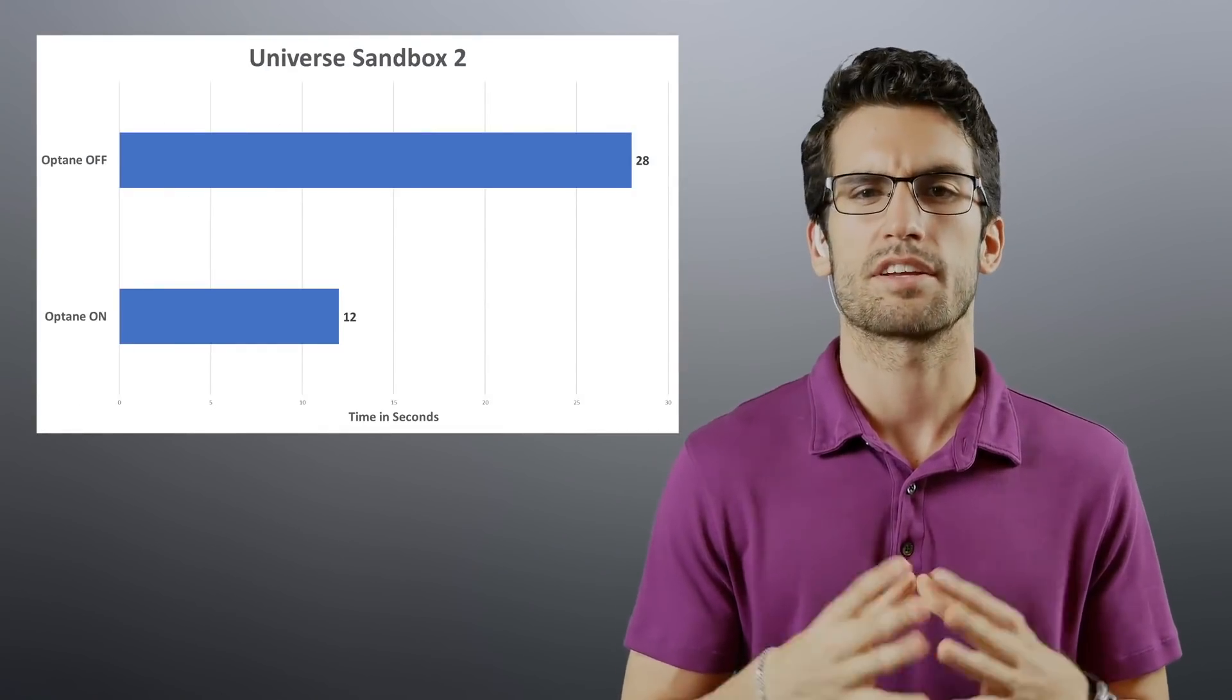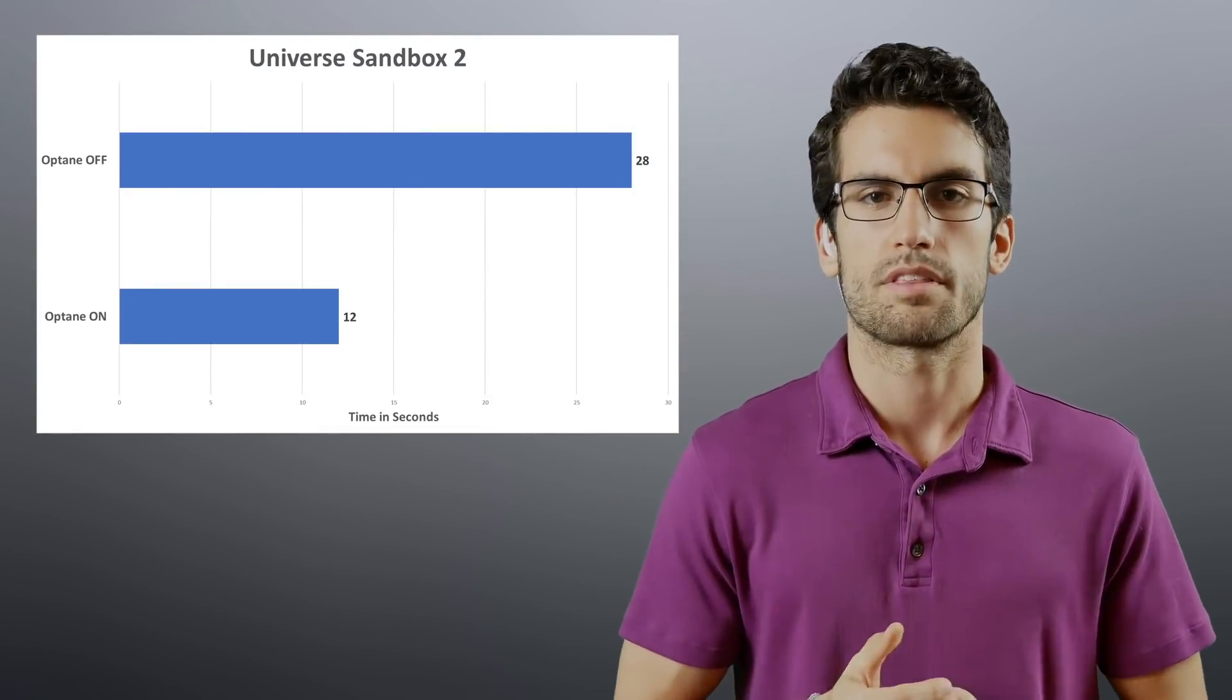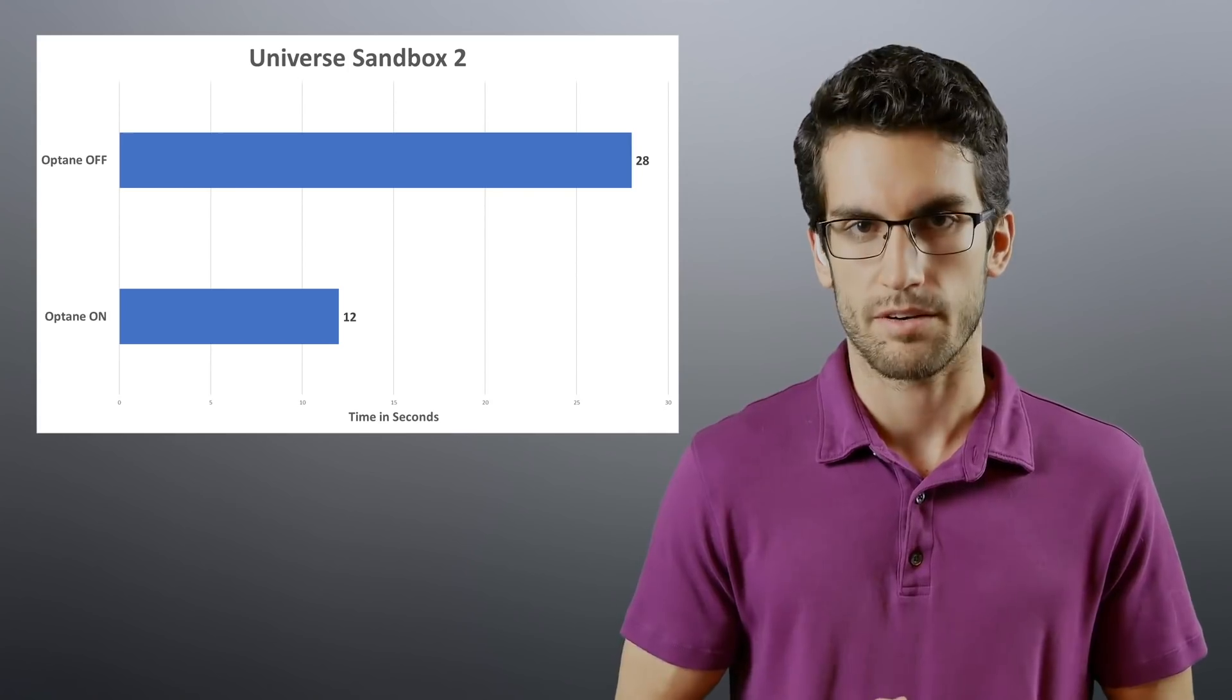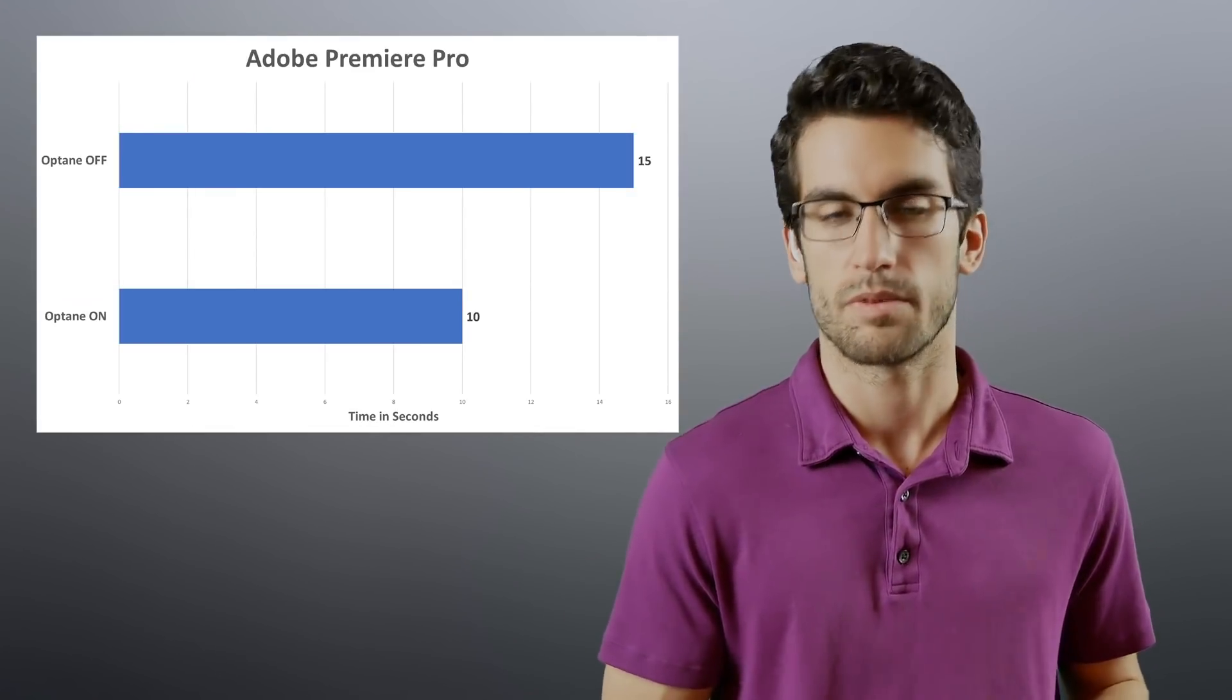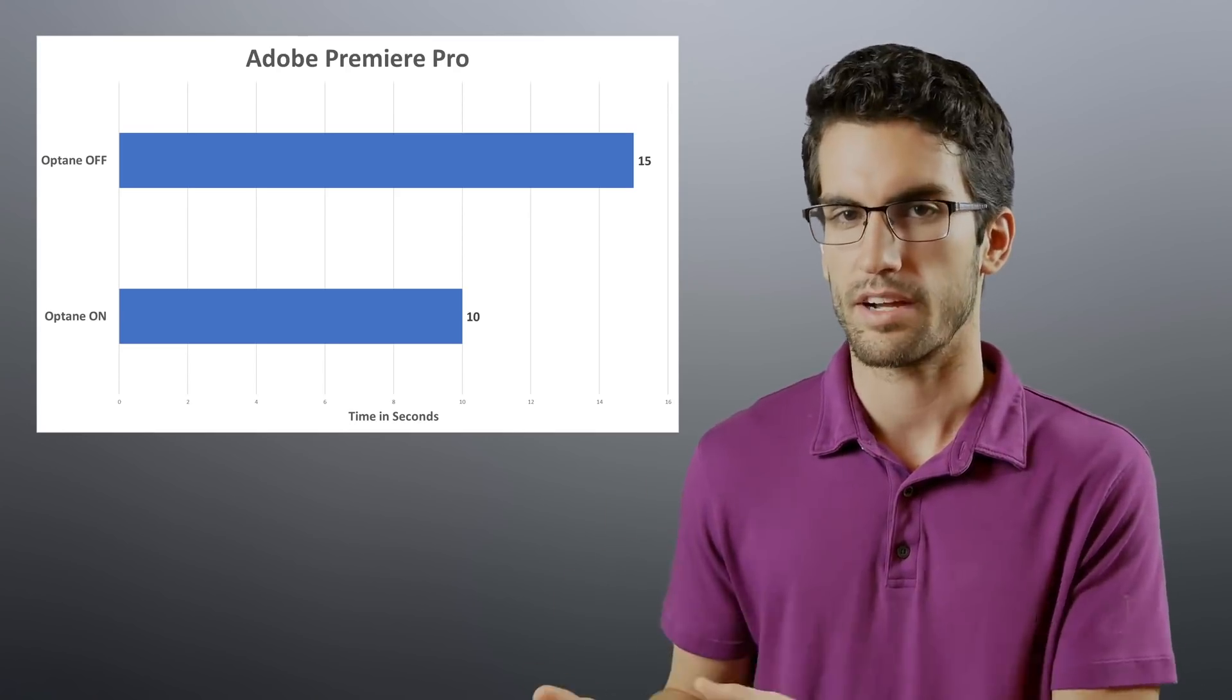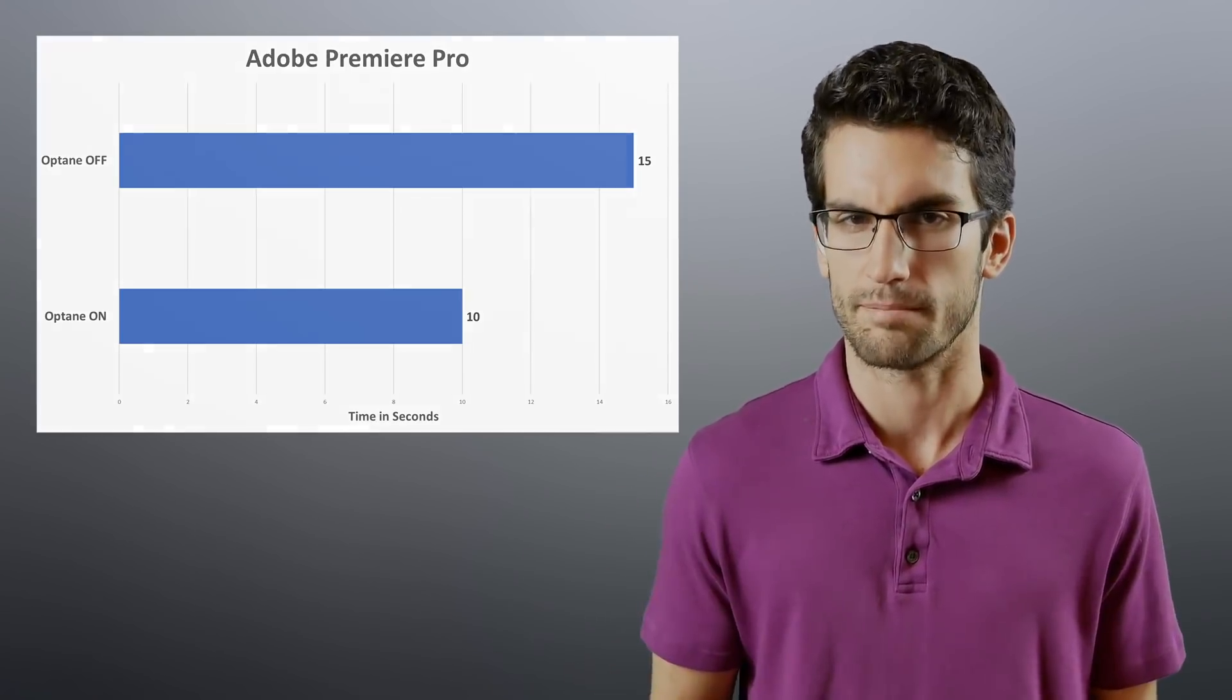We only wait about 12 seconds to get Universe Sandbox 2 to open, with Optane double that time without Optane. And if you're a content creator, Adobe Premiere took 10 seconds to open with Optane, 15 seconds without. Not too big a difference here, but it is still worth noting.